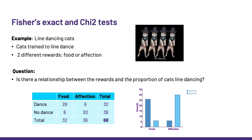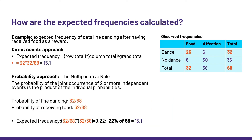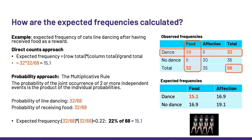We are pretty clear on how to get the observed frequencies, but what about the expected ones? Let me show you. Let's look at the expected frequency of cats line-dancing after having received food as a reward. There are two ways: the direct counts approach, which is a direct application of the chi-square formula, and the probability approach, which applies the multiplicative rule. For the direct counts approach, the expected frequency equals row total multiplied by column total divided by grand total — so 32 times 32 divided by 68, which is 15.1.